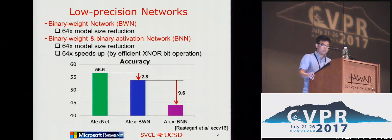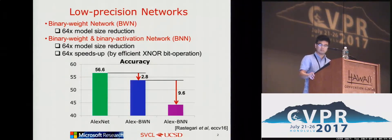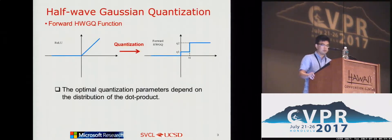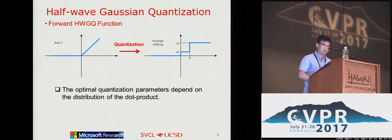In this paper, we made three major contributions to achieve a state-of-the-art low precision neural network. Our first contribution is to propose an effective low precision activation function: Half-Wave Gaussian Quantization, or HWGQ. It is a low precision version of the effective ReLU function.